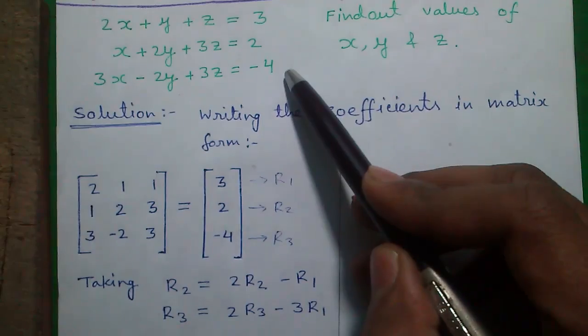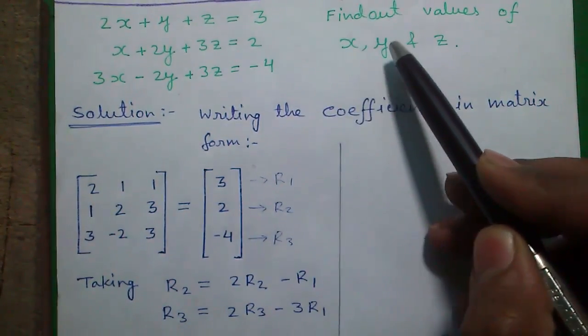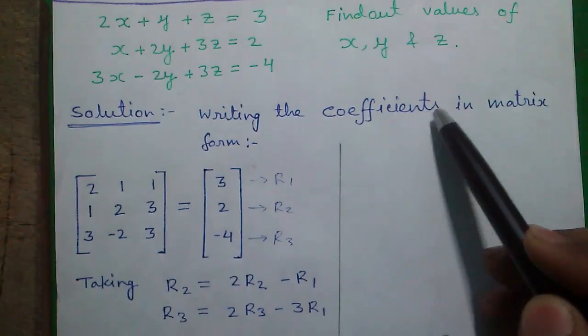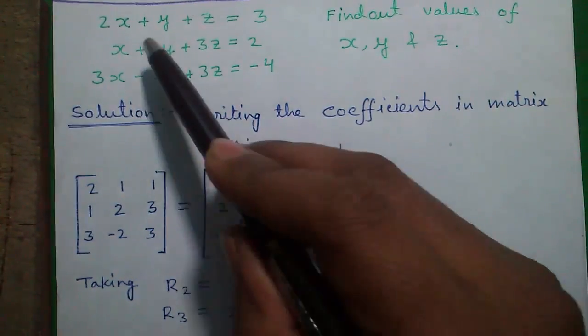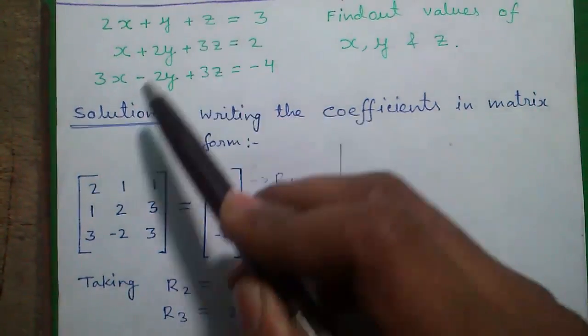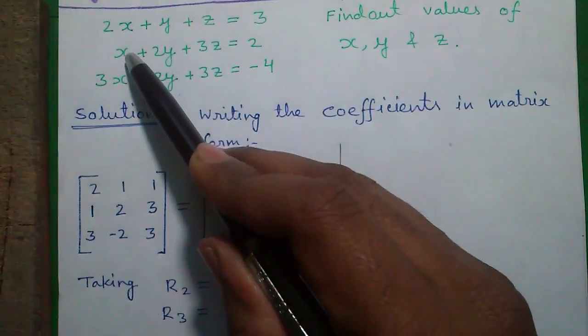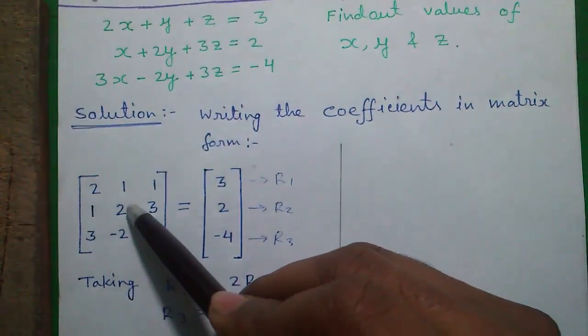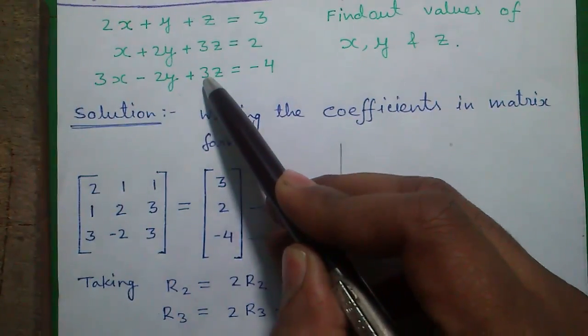Here are our linear equations and find out values of x, y and z. We are writing our coefficients in matrix form: 2, 1, 1; 1, 2, 3; 3, minus 2, plus 3.